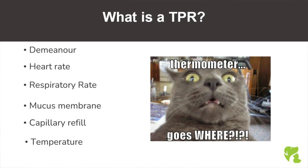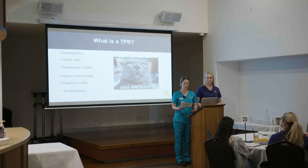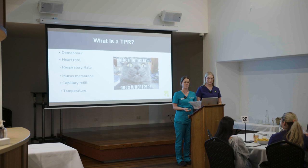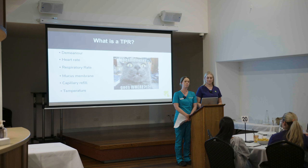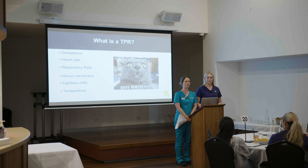The TPR generally consists of the patient's demeanor, heart rate, respiratory rate, mucous membranes, capillary refill time, and temperature. We generally perform these in a certain order to prevent creating an artificially high heart rate or respiratory rate. If a patient is anxious and stressed, it's beneficial to place them in a kennel and let them relax prior to performing the TPR. You can then perform the TPR from the kennel door, which ensures you get a normal respiratory rate as opposed to a stress-induced one, and a more accurate representation of the patient's demeanor.